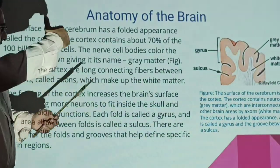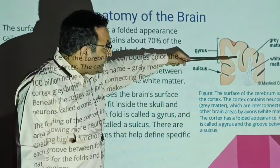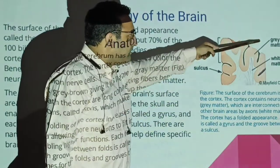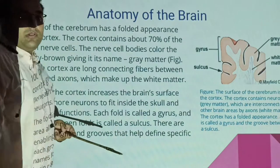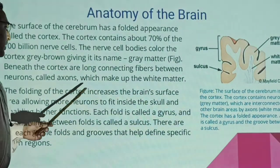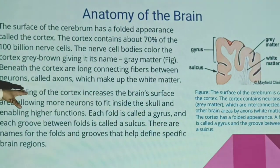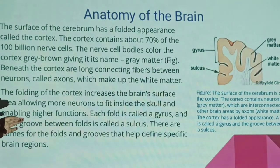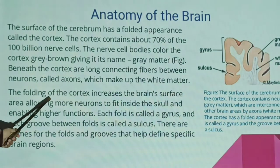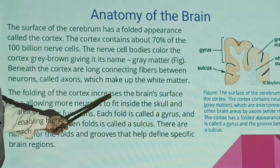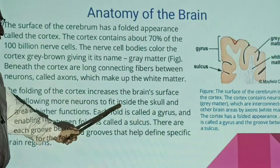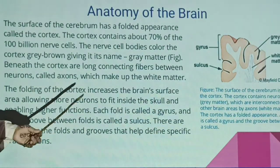Inside the cortex, the color is white matter. So the outer part is gray matter and the inner part is white matter. The white matter is mainly made up of axons. The folding of the cortex increases the brain surface area, which allows more and more neurons to fit, adding to higher brain function.